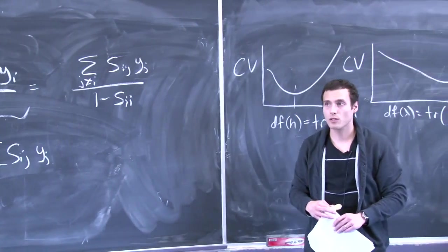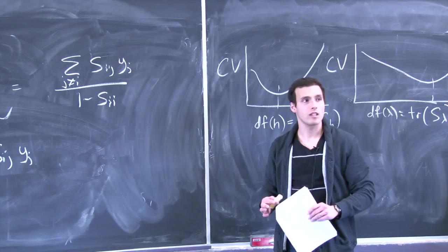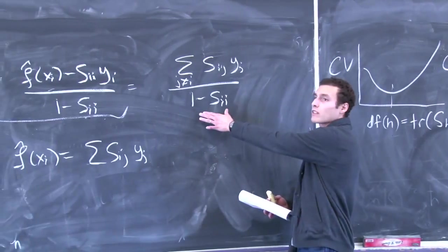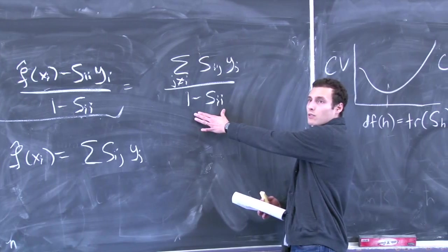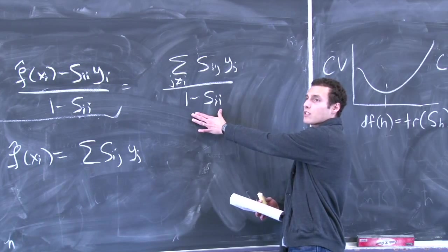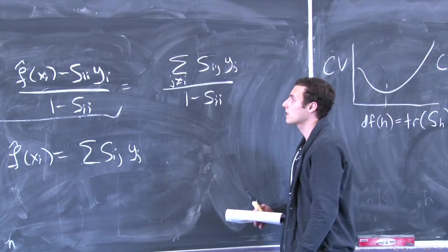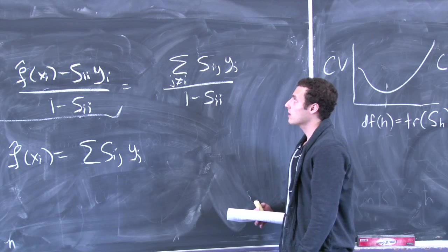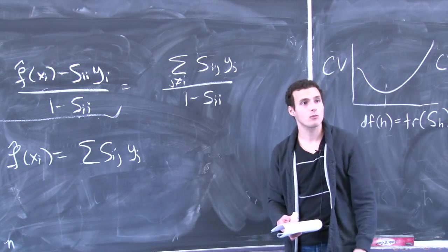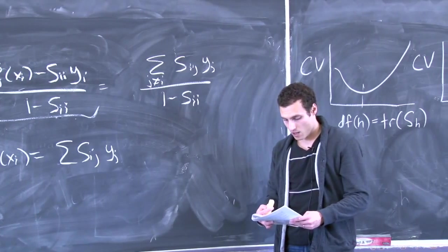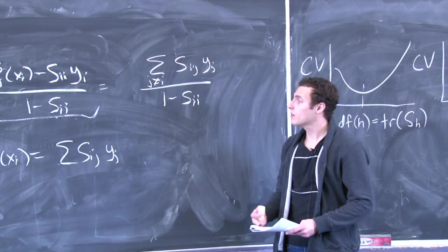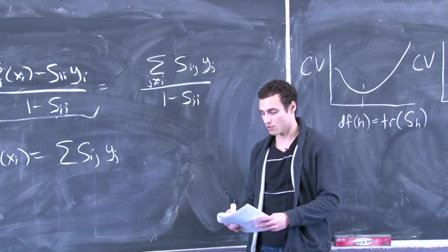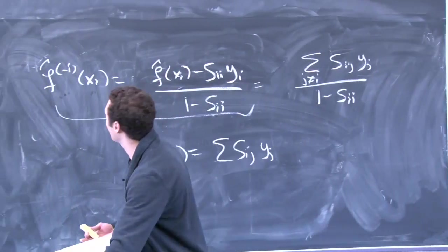You can immediately see this is true with kernel smoothing — you're just changing which points you take into the sum for the kernel smoothing. It's also true for smoothing splines, which you'll approach on the homework. So for all of those methods you can do cross-validation in a computationally efficient manner just with this formula — no refitting involved.